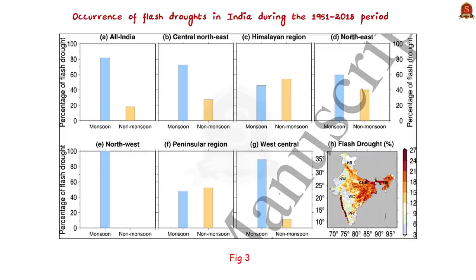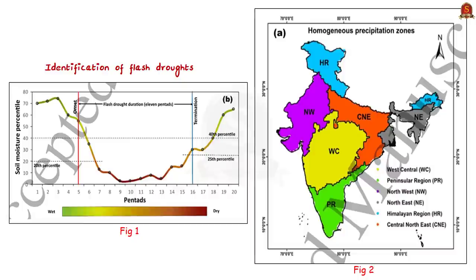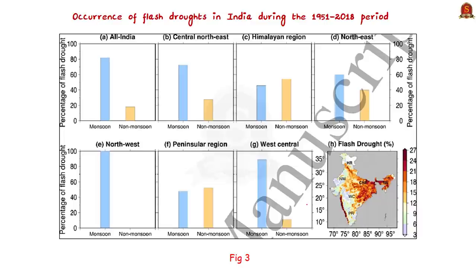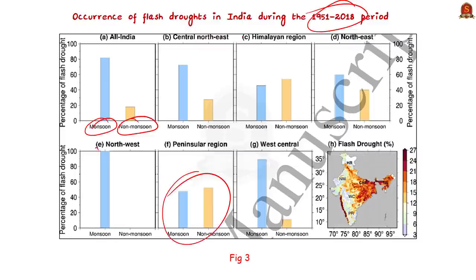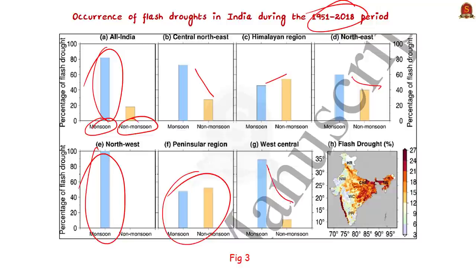This image shows six homogeneous precipitation regions in India: the Himalayan region, northwest, central northeast, northeast, western central, and the peninsular south. This graph shows the fraction of flash droughts which occurred during monsoon and non-monsoon seasons in India during the 1951 to 2018 period. In most regions except the south, droughts are higher during the monsoon season. So we can say that in contrast with conventional drought, which may occur throughout the year, flash drought typically occurs during warm seasons.